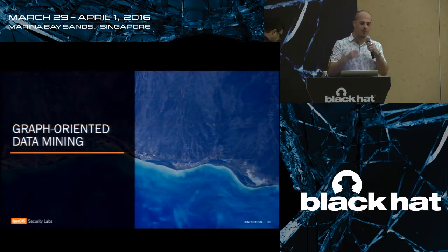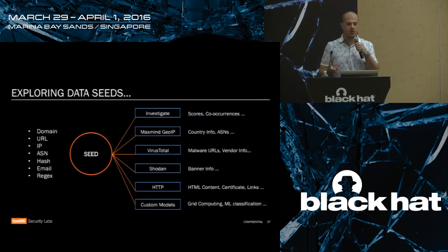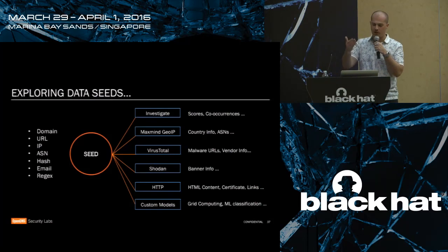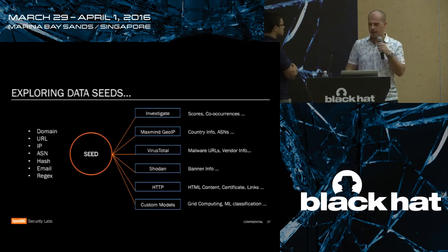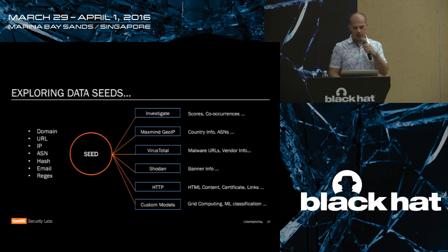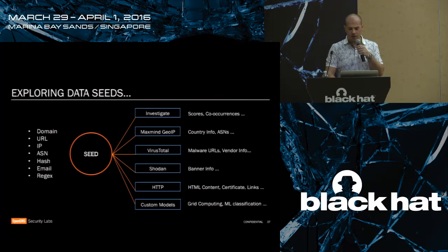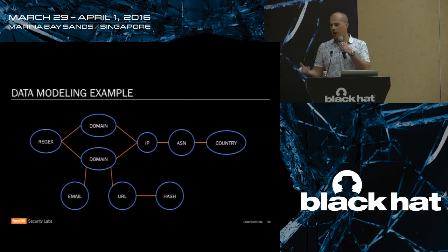Now I want to talk about graph-oriented data mining — the miner script. As security analysts, when you do any sort of exploration or investigation, we always have the same problem. You have lots of different input points such as domains, URLs, IPs, ASNs, hashes, emails, regexes — you name it. There's a lot of information available out there: the Investigate API, which is our threat intel product, along with MaxMind, VirusTotal, Shodan, HTTP requests, and a lot of custom models. You have input points, and data is out there in a lot of different places. It turns out that one of the most beautiful ways to aggregate this information and connect all the dots in a formalized way is a graph.